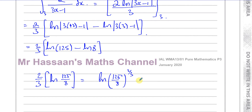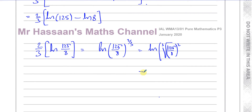The power of 2 thirds means the cube root of whatever's inside, squared. The denominator is the root and the numerator is the power. So I can write this as ln of: the cube root of 125 is 5, 5 squared is 25; and the cube root of 8 is 2, 2 squared is 4. So I end up with ln of 25 over 4.